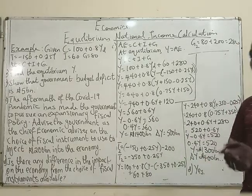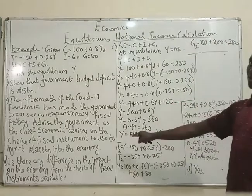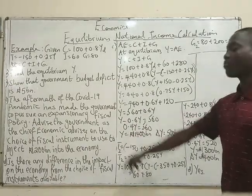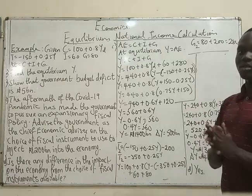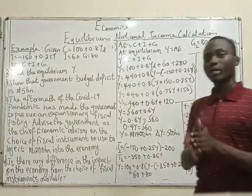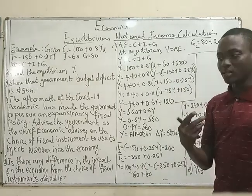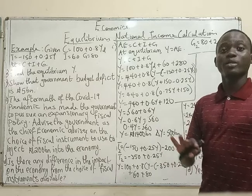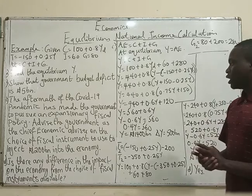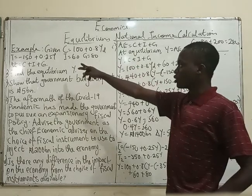So if the government chooses to pursue an expansionary fiscal policy by increasing its spending, the equilibrium national income will change by 500 billion. Now let us check what happens if the government instead decides to reduce taxes by 200 billion, so we can know what to actually recommend to the government.